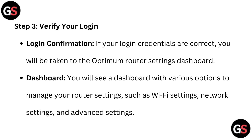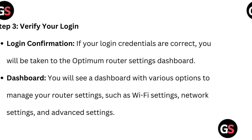Step 3: Verify your login. If your login credentials are correct, you will be taken to the Optimum Router settings dashboard. You will see a dashboard with various options to manage your router settings, such as Wi-Fi settings, network settings, and advanced settings.